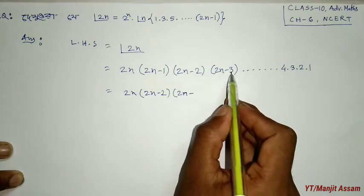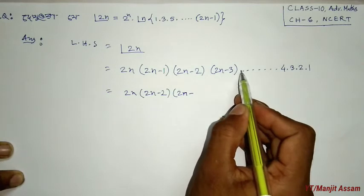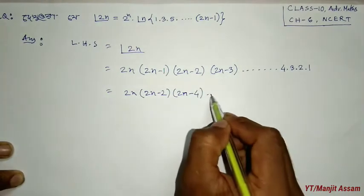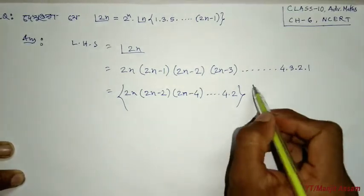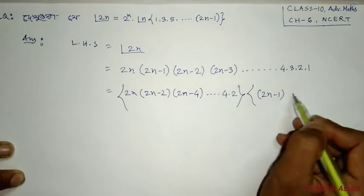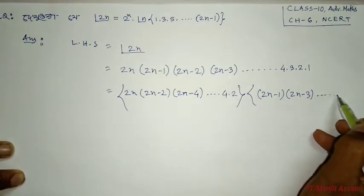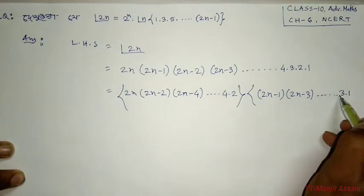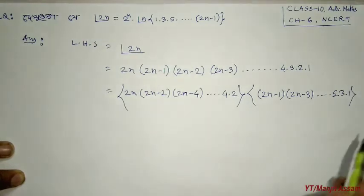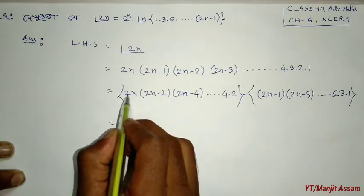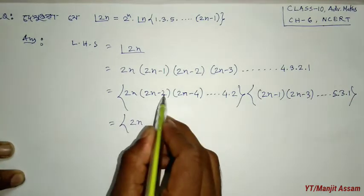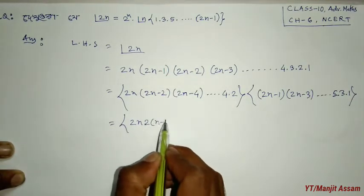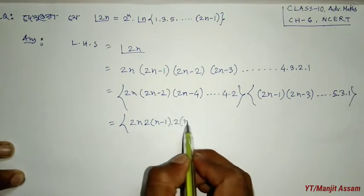From the even terms we take out a factor of 2 from each — giving us 2 to the power n times factorial n. The product of the odd terms 1 into 3 into 5 dot dot dot up to (2n minus 1) remains. So the two parts together give us the right hand side.